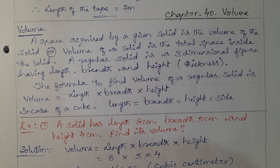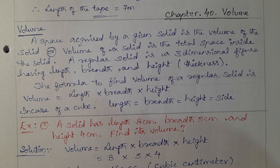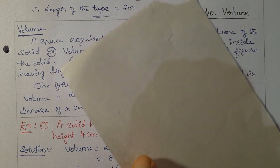First example: a solid has length 8 cm, breadth 5 cm, and height 4 cm. Find its volume.